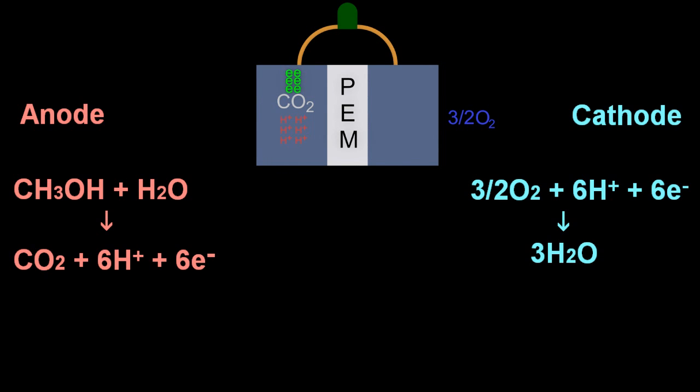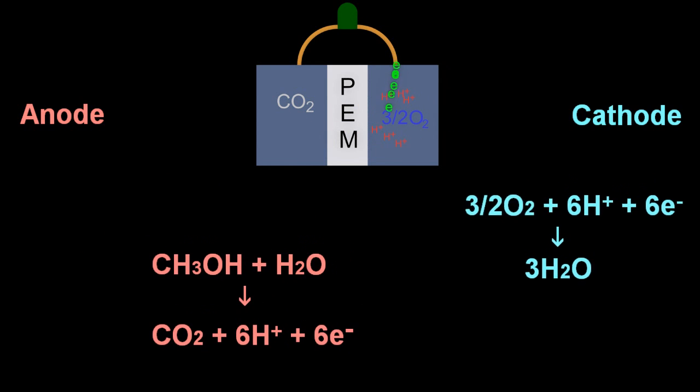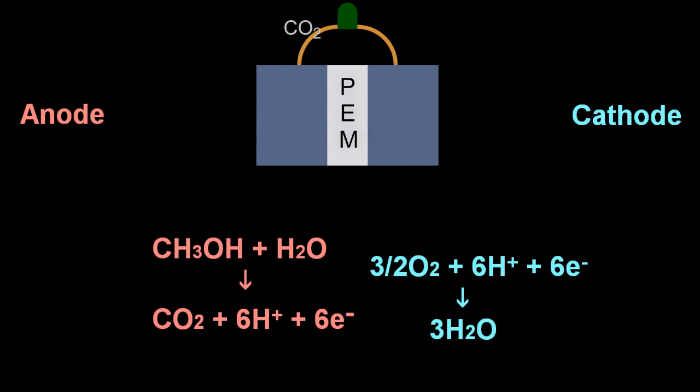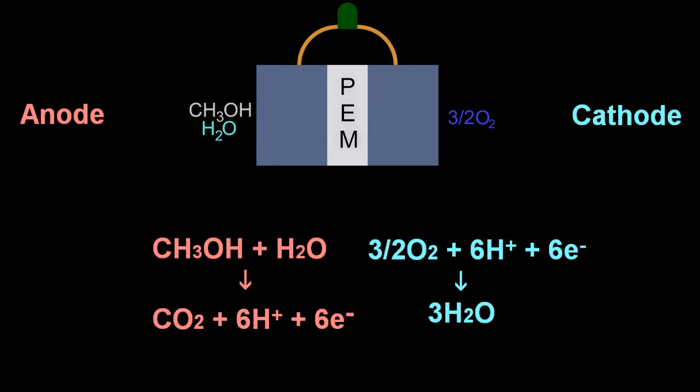Again, looking at the half equations, the anode, which is the negative electrode, methanol and water makes carbon dioxide, protons and electrons. And at the cathode, the positive electrode, oxygen, protons and electrons make water.